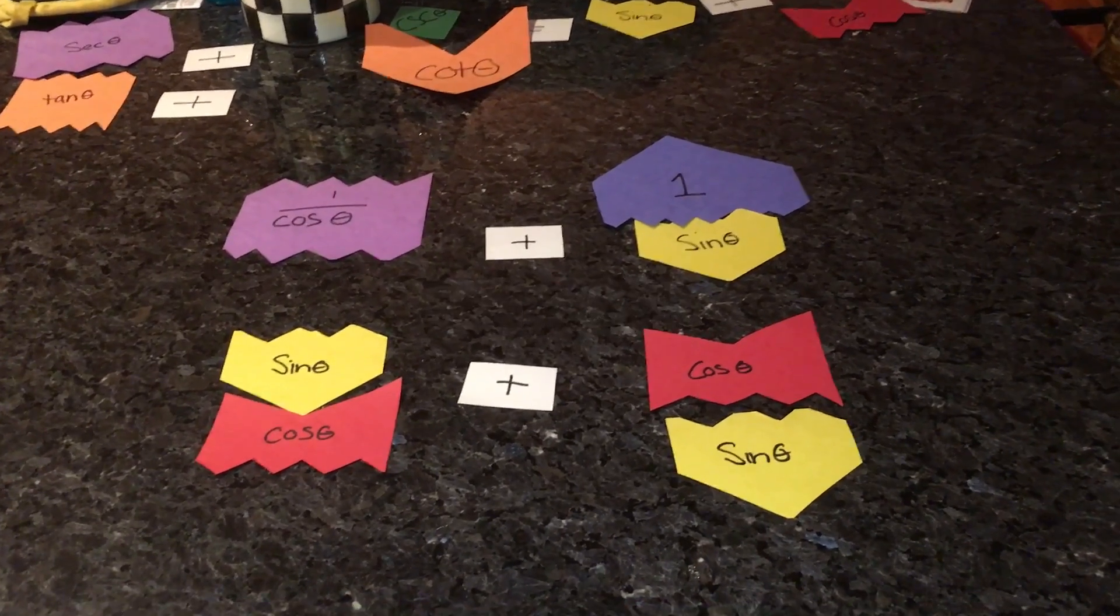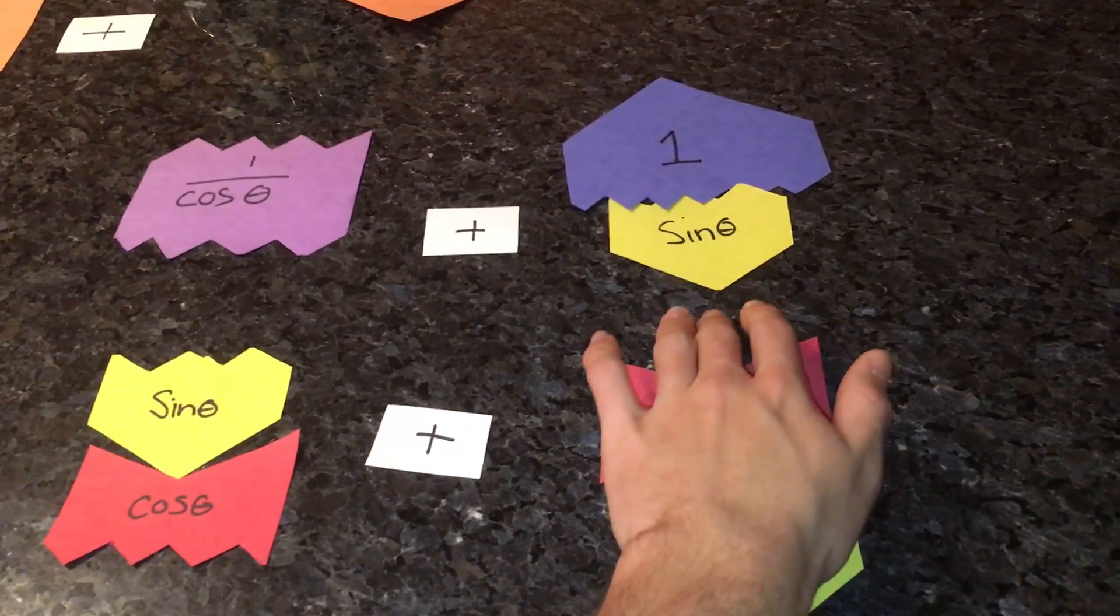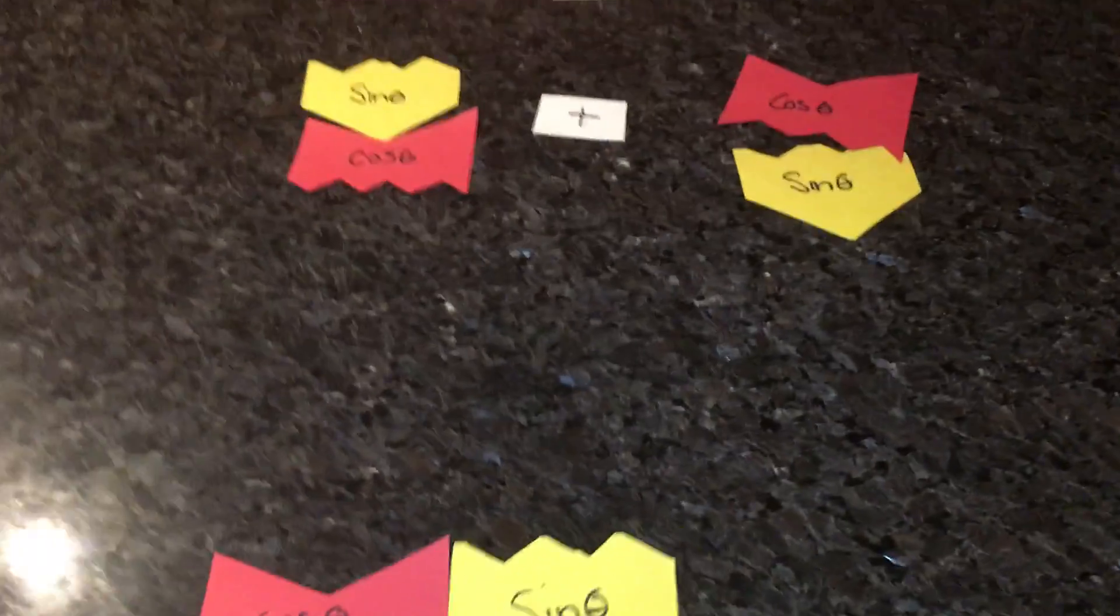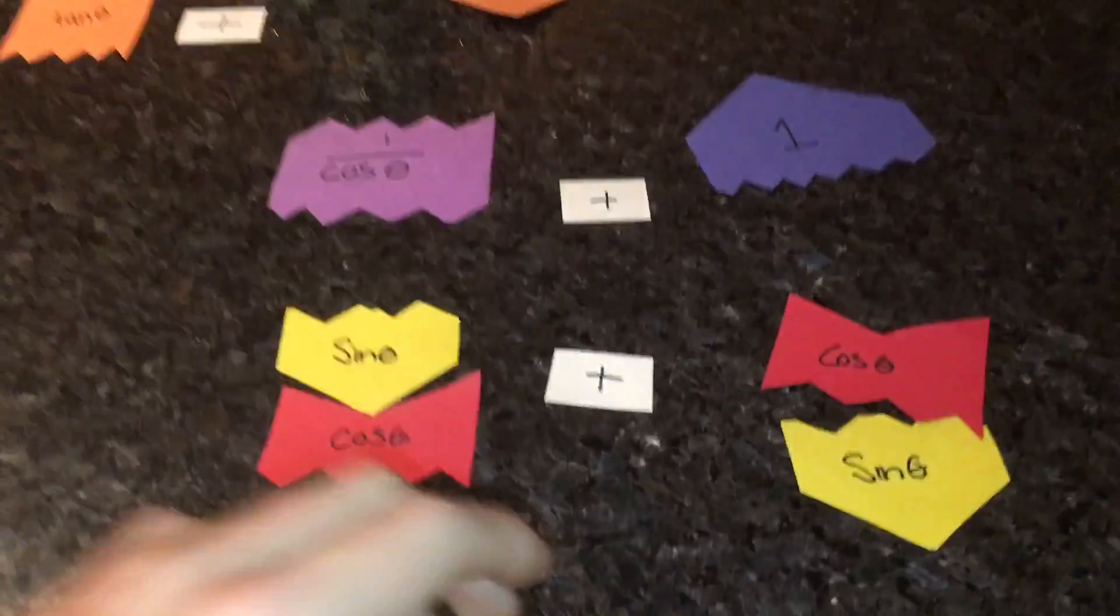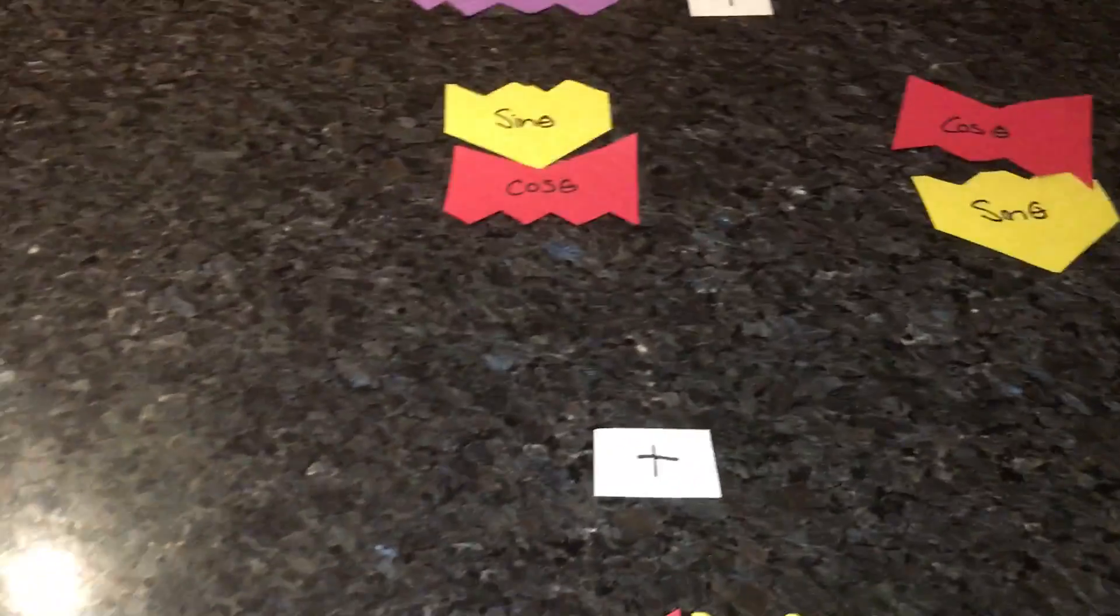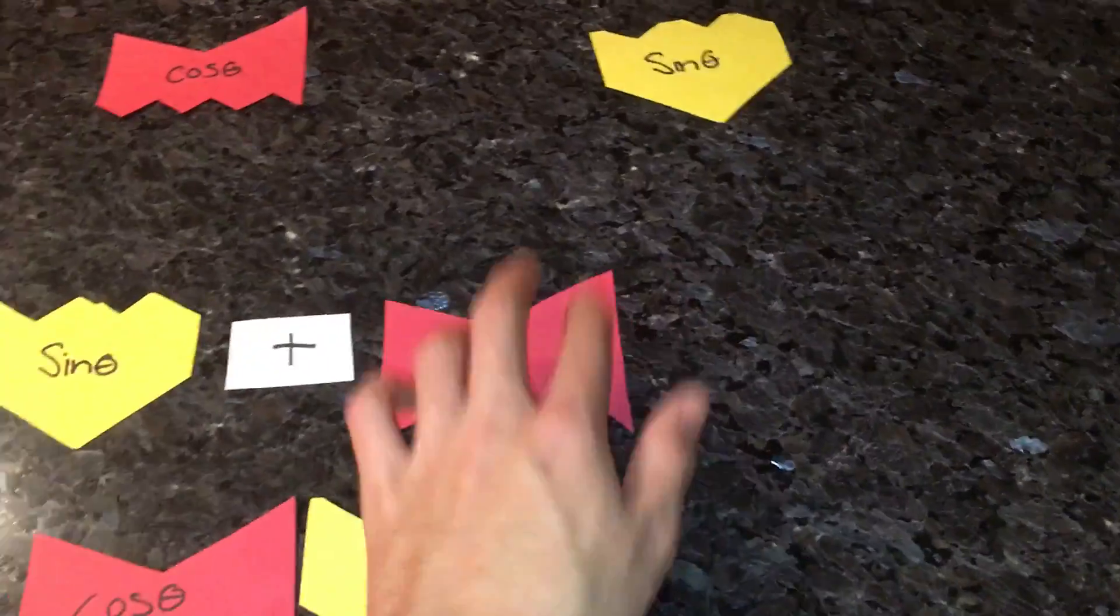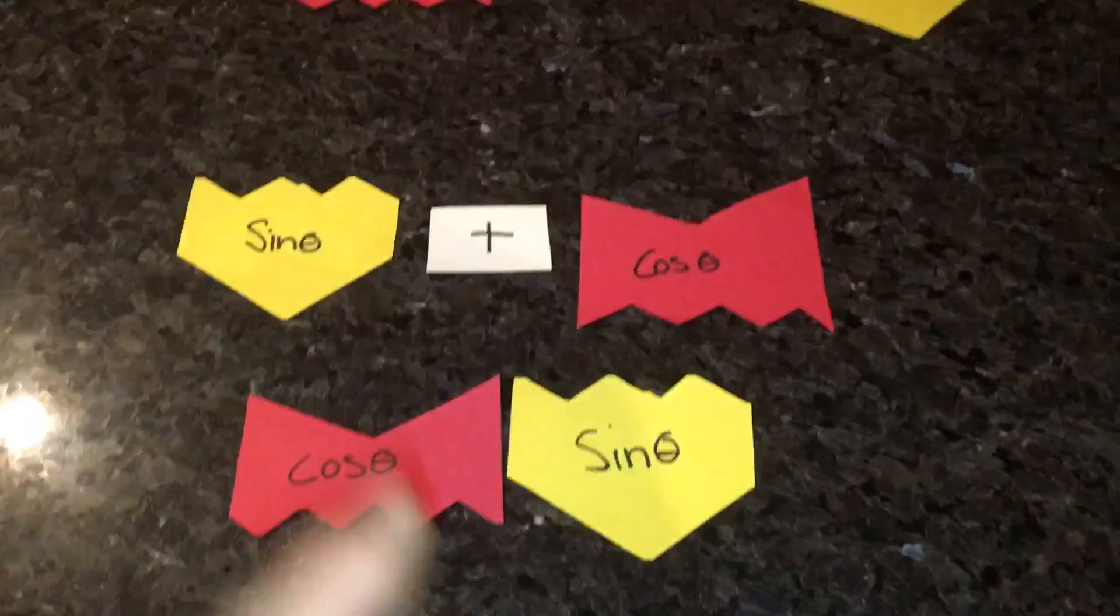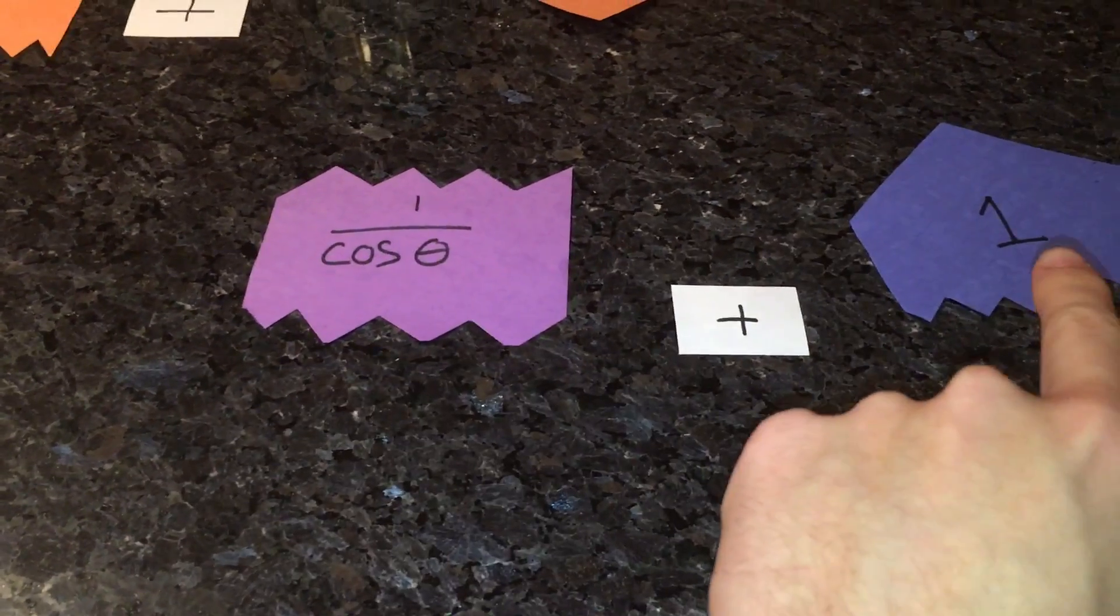multiply to the top as well. So our common denominator will be cosine times sine, and above that we will have sine plus cosine, because we multiplied cosine and sine by 1 and 1.